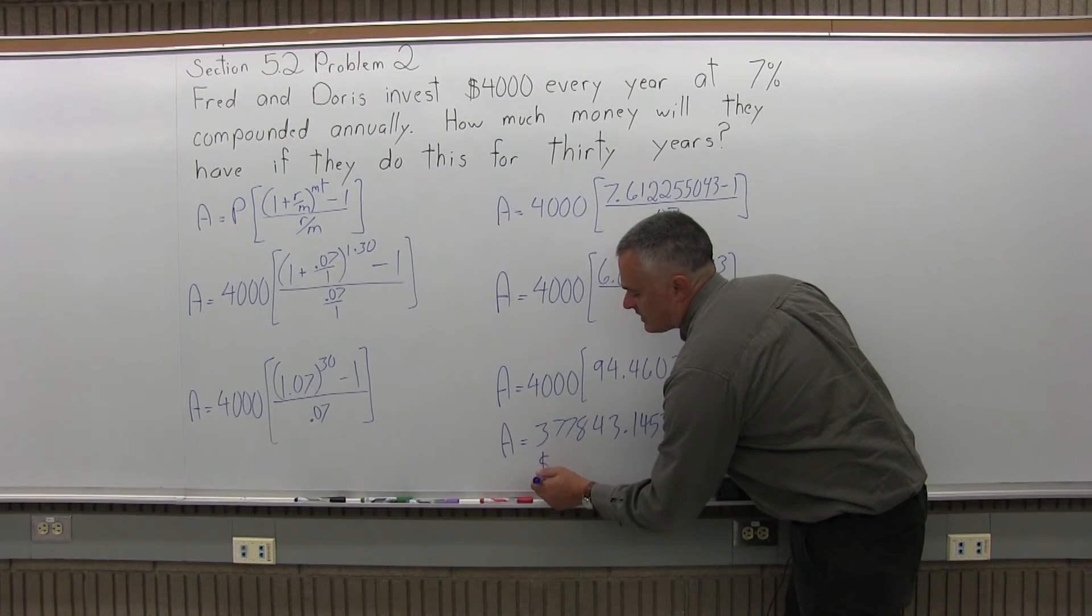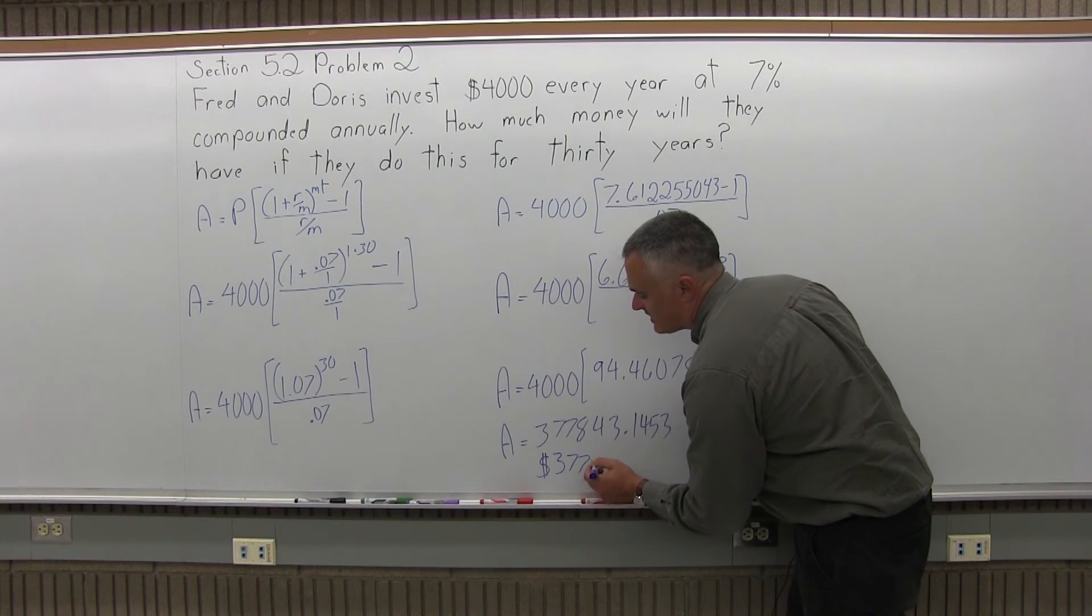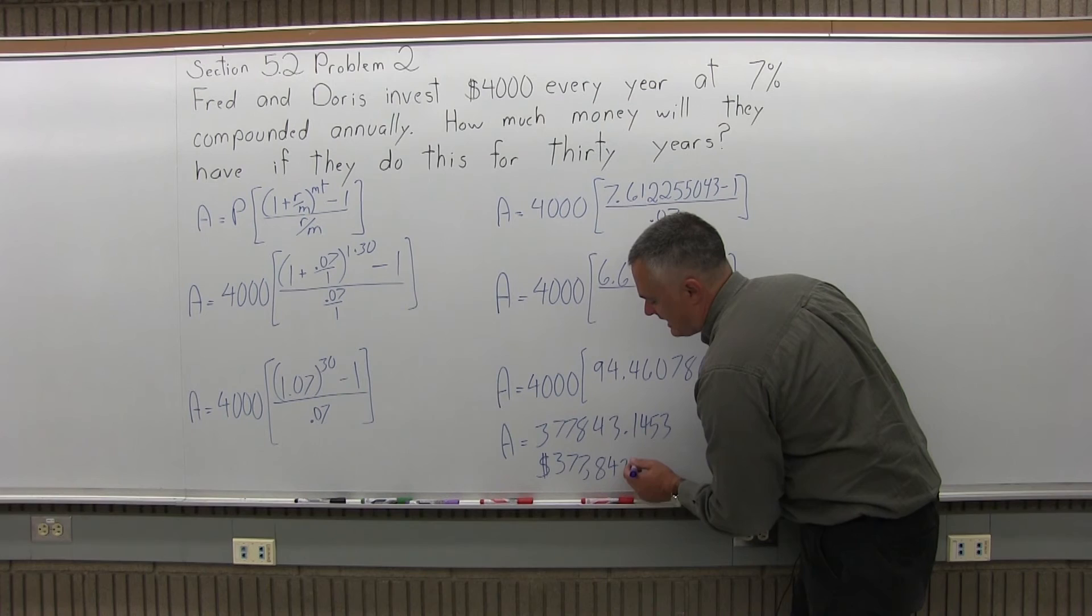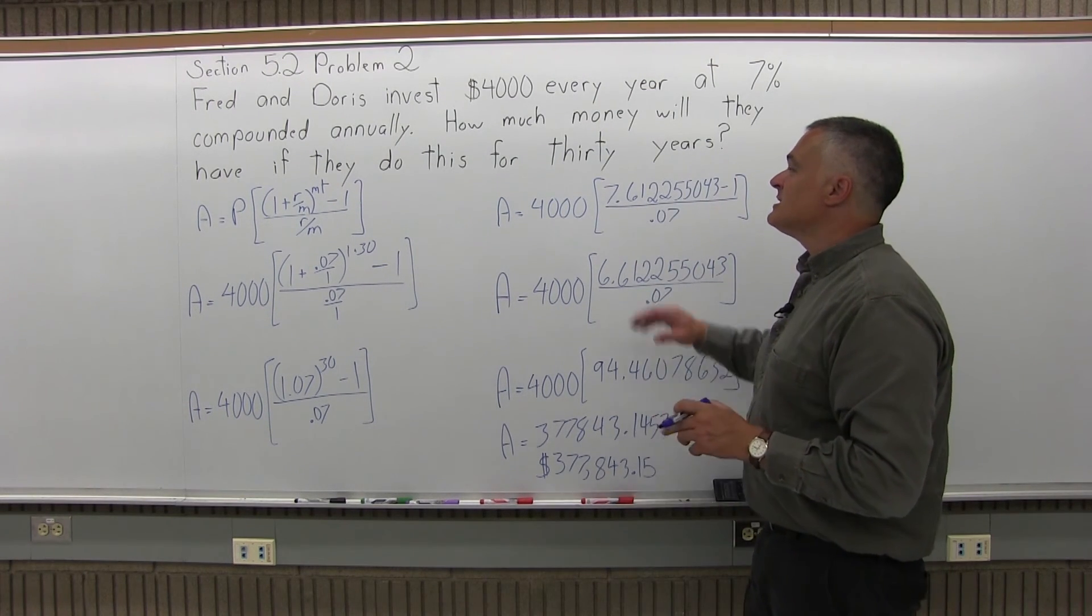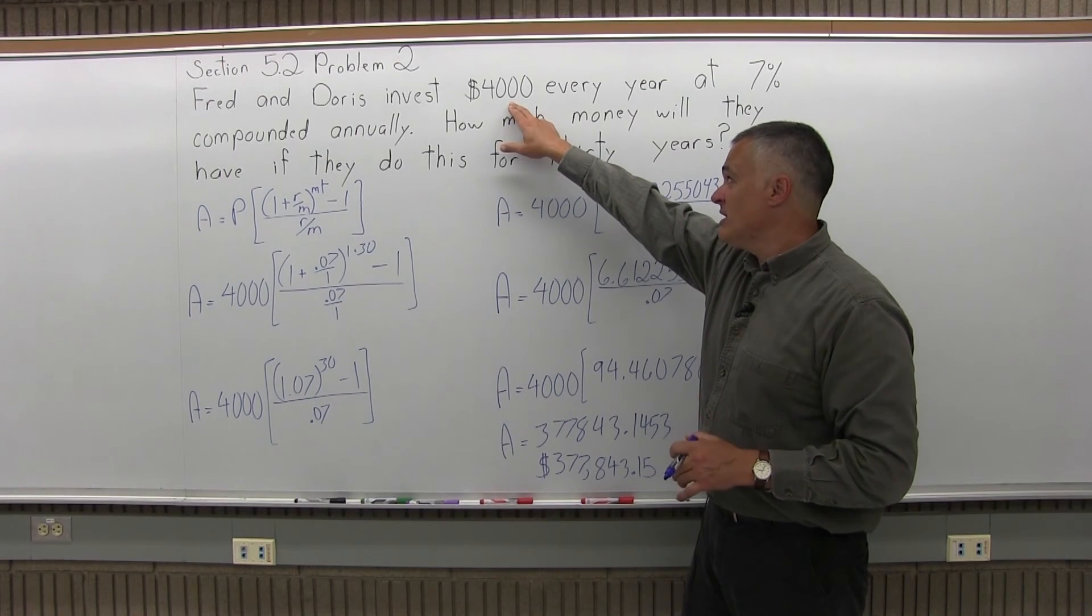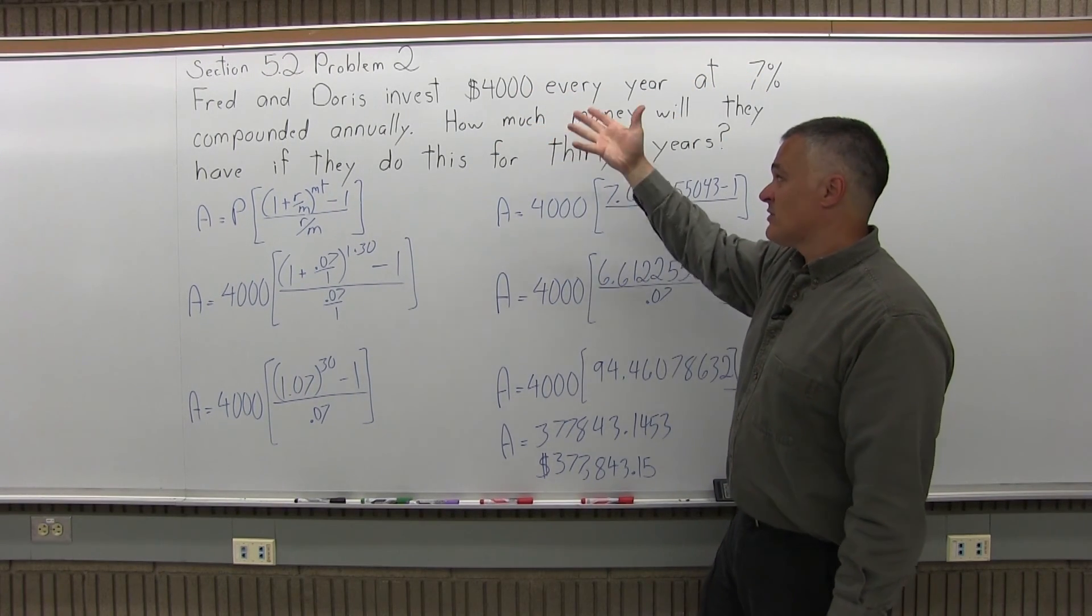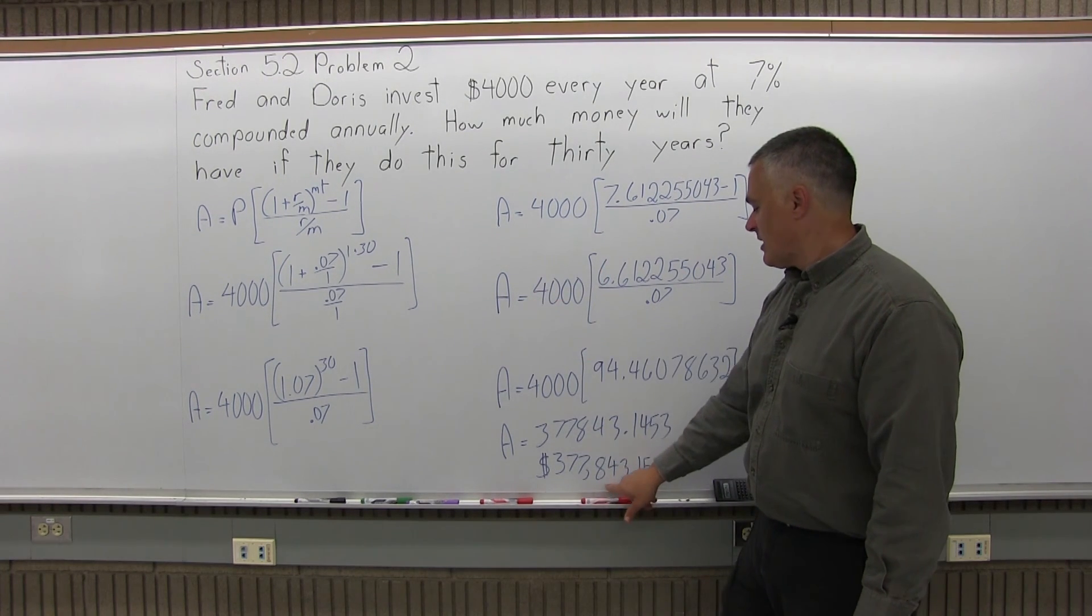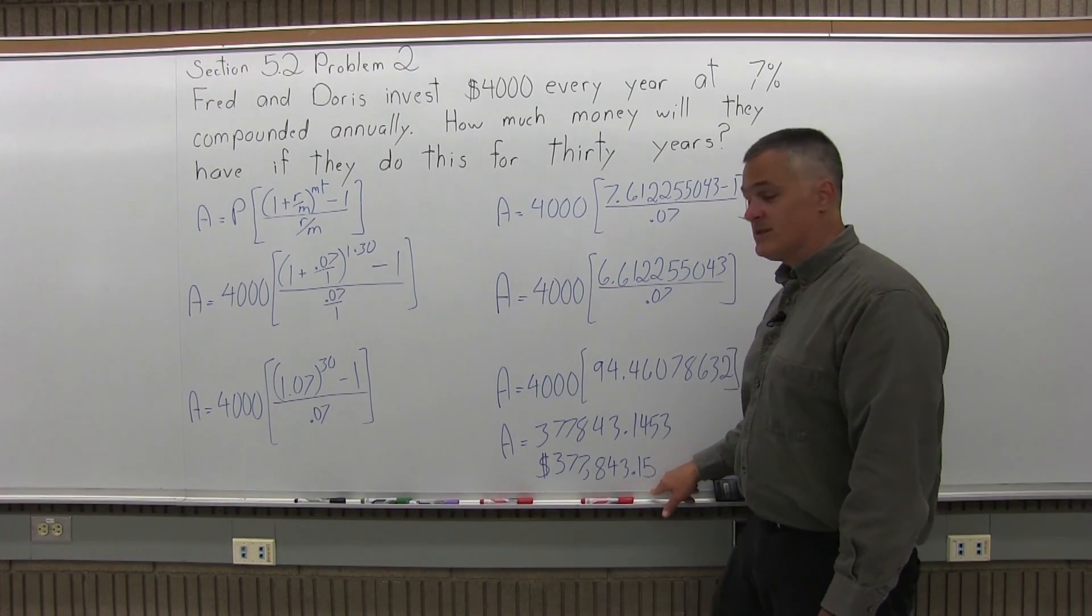So, my final answer is, if I put in the commas too, is 377,843.15. So, if this couple saves the $4,000 every year in an account that pays 7% compounded annually, after 30 years of doing this, and I assume this is going to be for a retirement purpose, they'll have 377,843.15. It makes sense. Take care!